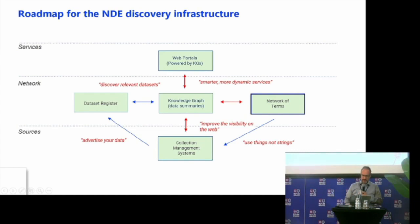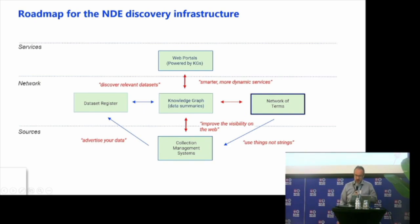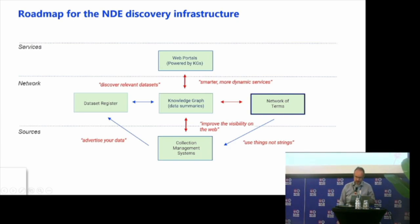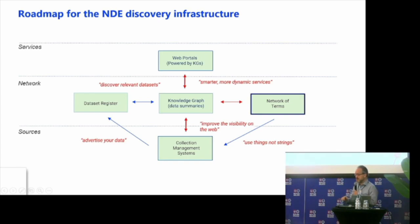Our roadmap for the discovery infrastructure begins at the top with the web portals, which we want to be powered by knowledge graphs. Knowledge graphs get their data from the network of terms and the dataset register. But of course, data at the source — so the collection management systems are really important. Users there have to use terms and vocabularies, so we don't have any strings but really links.